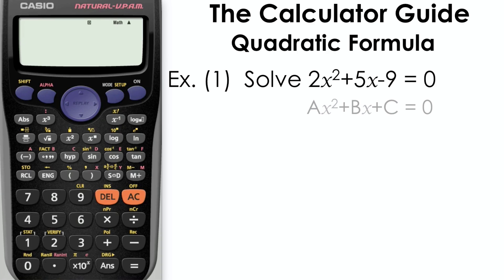First let's match our equation to the general equation ax² + bx + c = 0. Our a equals 2, b equals 5, and our c is -9, so be careful to include the minus sign with this.